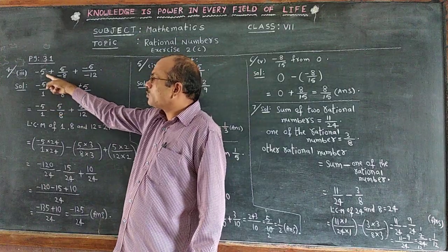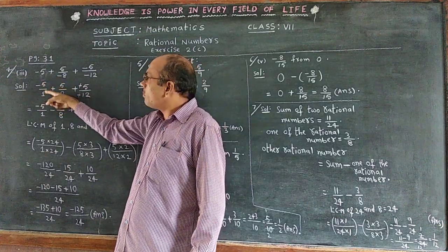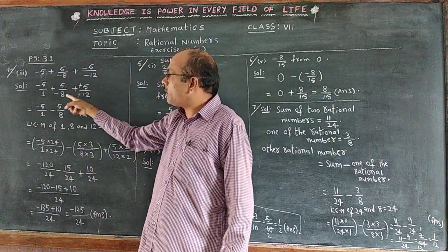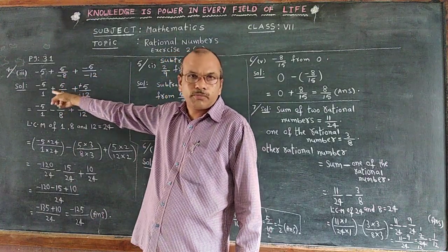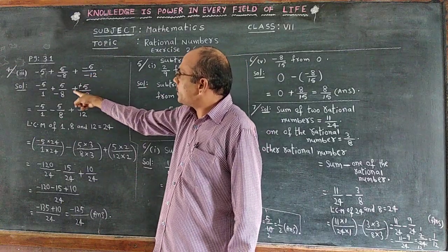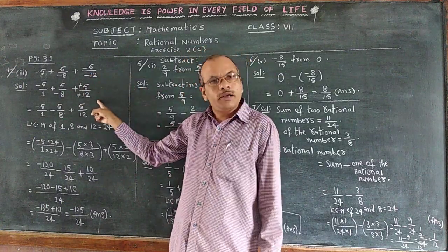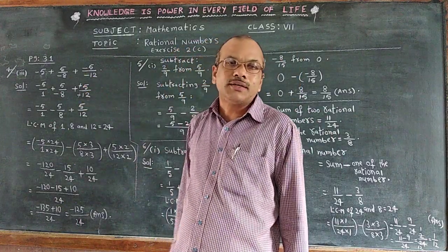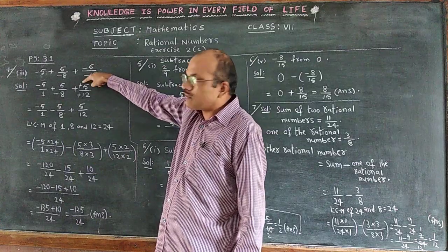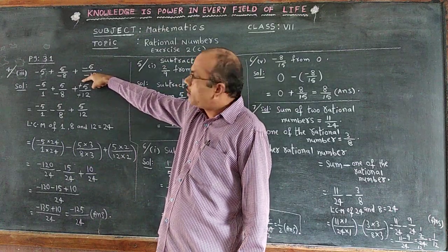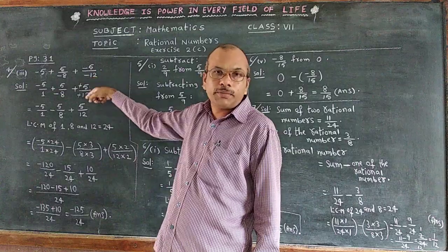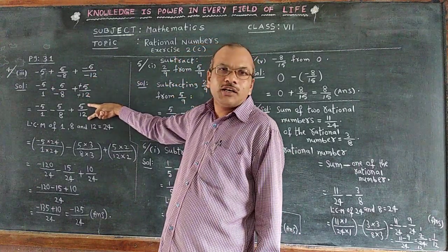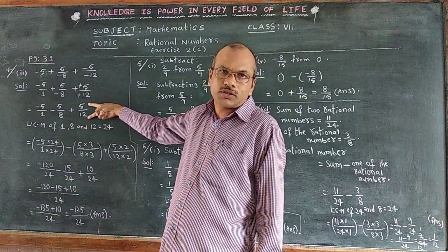So minus 5 is written as minus 5 by 1. The next term is plus 5 by minus 8, and the other term is plus minus 5 by minus 12. Now, the minus in the numerator and the minus in the denominator cancel each other out, so that becomes plus 5 by 12.